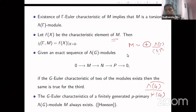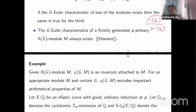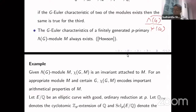Let me take one example coming from arithmetic. As I said, the Euler characteristic is an invariant associated to M, and for an appropriate module M and certain group G, this Euler characteristic encodes important arithmetic information — that's what the next example is going to show us.